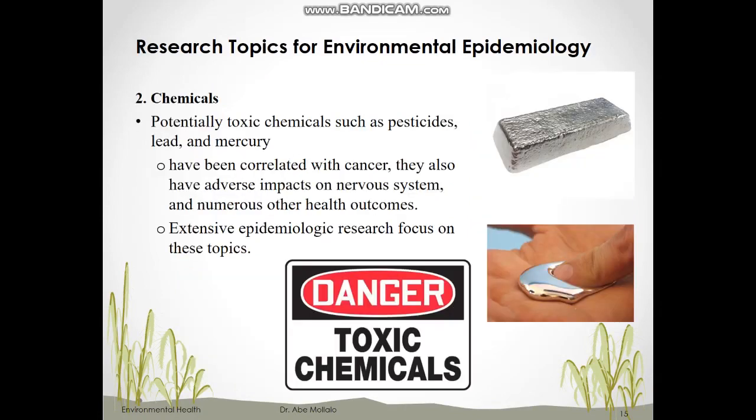Another main research topic in environmental epidemiology is chemicals. Studies have shown that some toxic chemicals such as pesticides, lead, and mercury are strongly associated with cancers because some chemicals are carcinogens — they can initiate cancer. Chemicals also have adverse impacts on the nervous system and can cause numerous other health outcomes. This is a hot topic we will cover in week five.